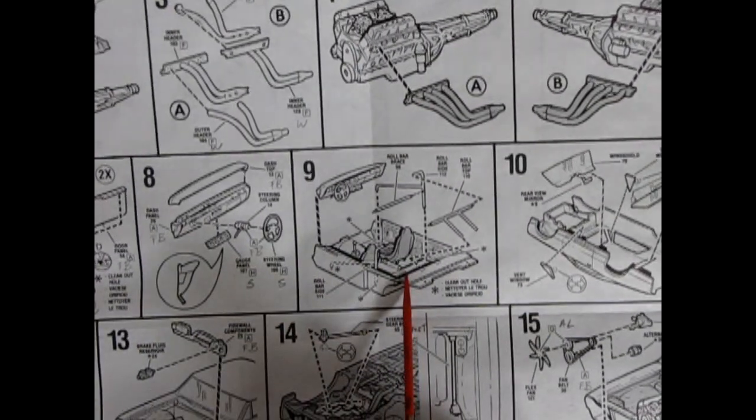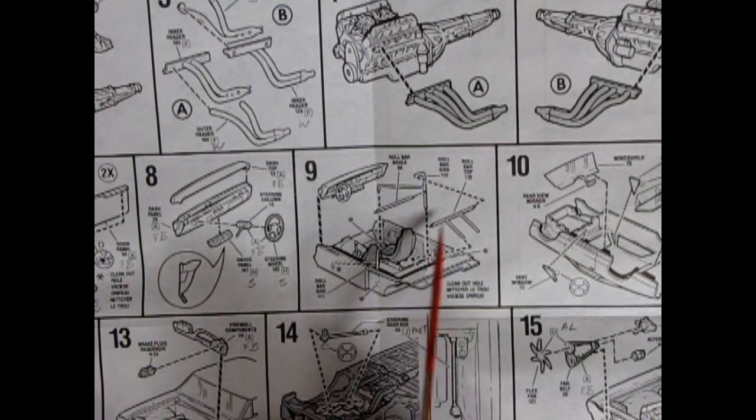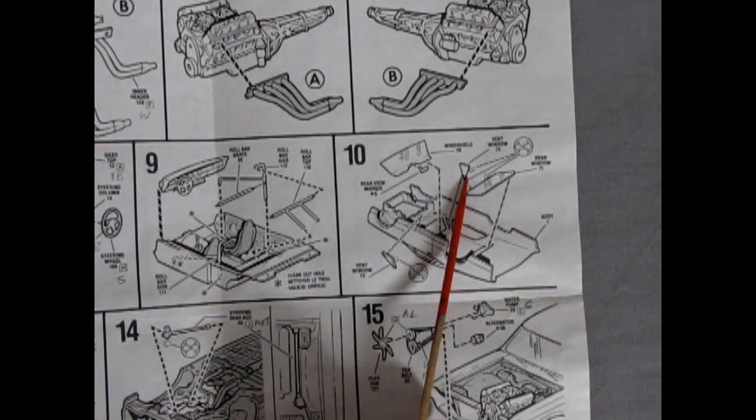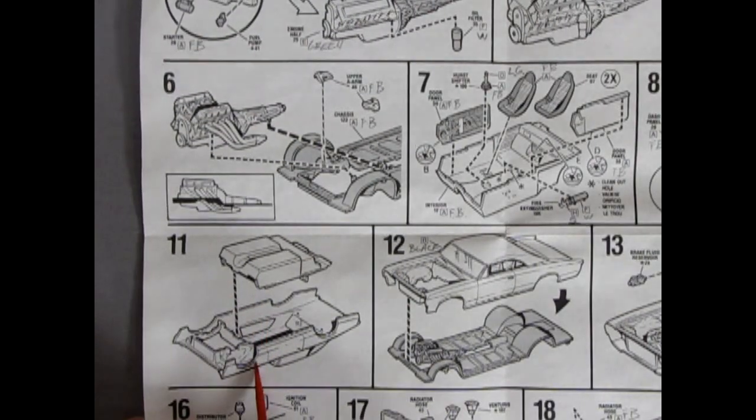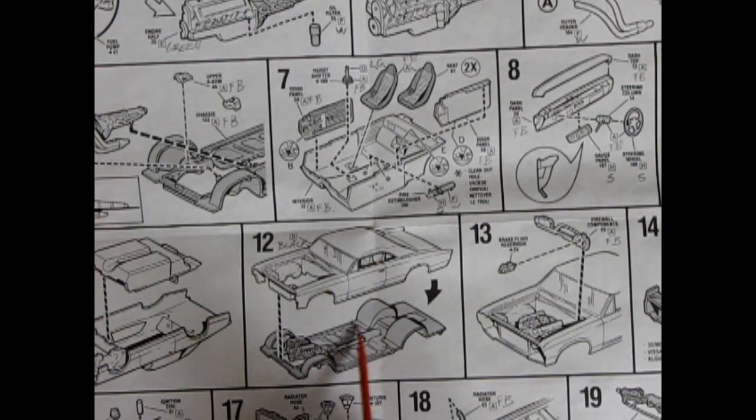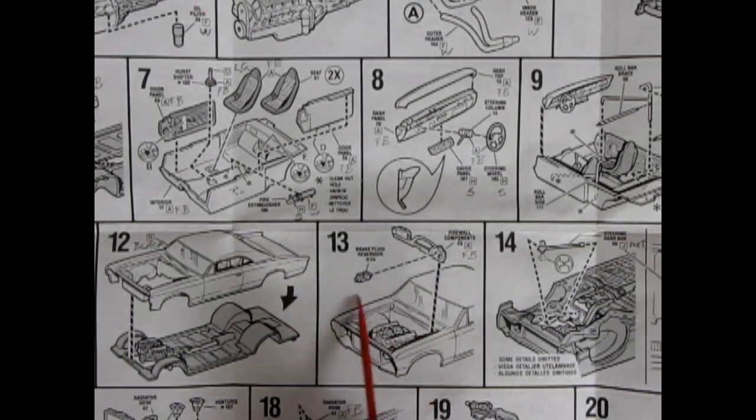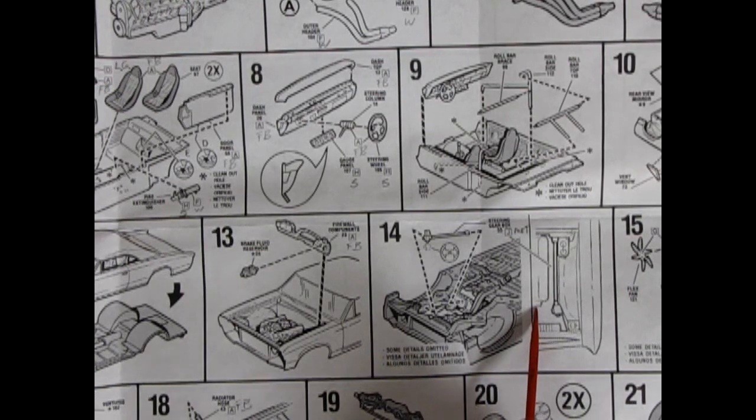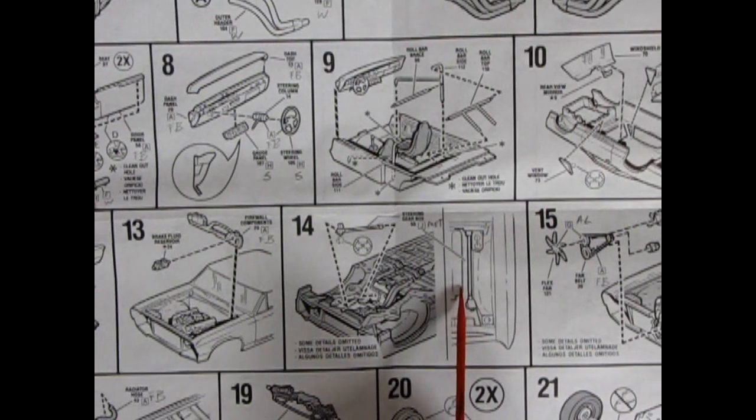Then in panel nine here, there's more of the interior going together. The dashboard drops in, and then you've got that nice roll cage in here with all the roll bars. And then panel 10 is showing our glass going in. You get the vent windows, the no drafts, as well as the rear windows and front window and rear view mirror. Then we pop our interior into our body. Pop the body and interior onto the chassis. Then we can drop our firewall component in there with our brake reservoir. And then we have our steering linkage going in, which is always nice when I put the steering linkages in these kits.